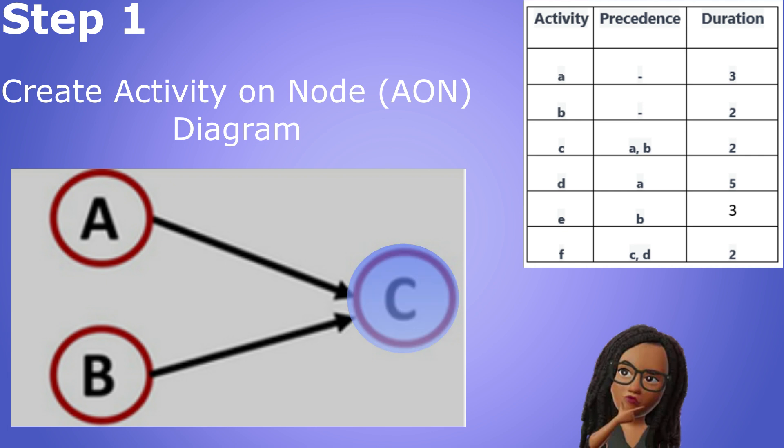C is known as a successor activity of both A and B because C succeeds or comes after them. Successor activities depend on their predecessors ending before they are able to start.